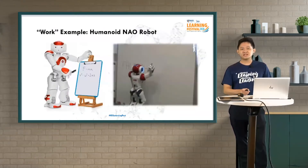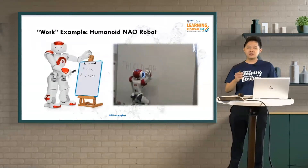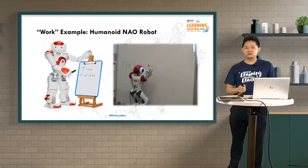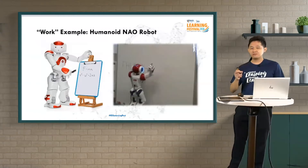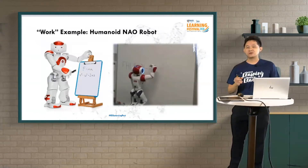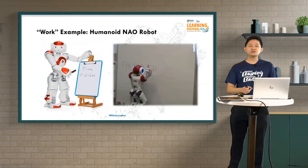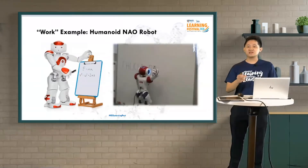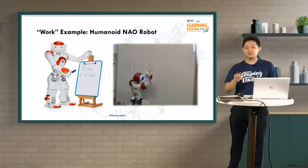The last part of the work spectrum: we have the humanoid nanorobot, which is actually multi-purpose. One of its popular uses is to program this robot to teach children on topics like physics and mathematics.